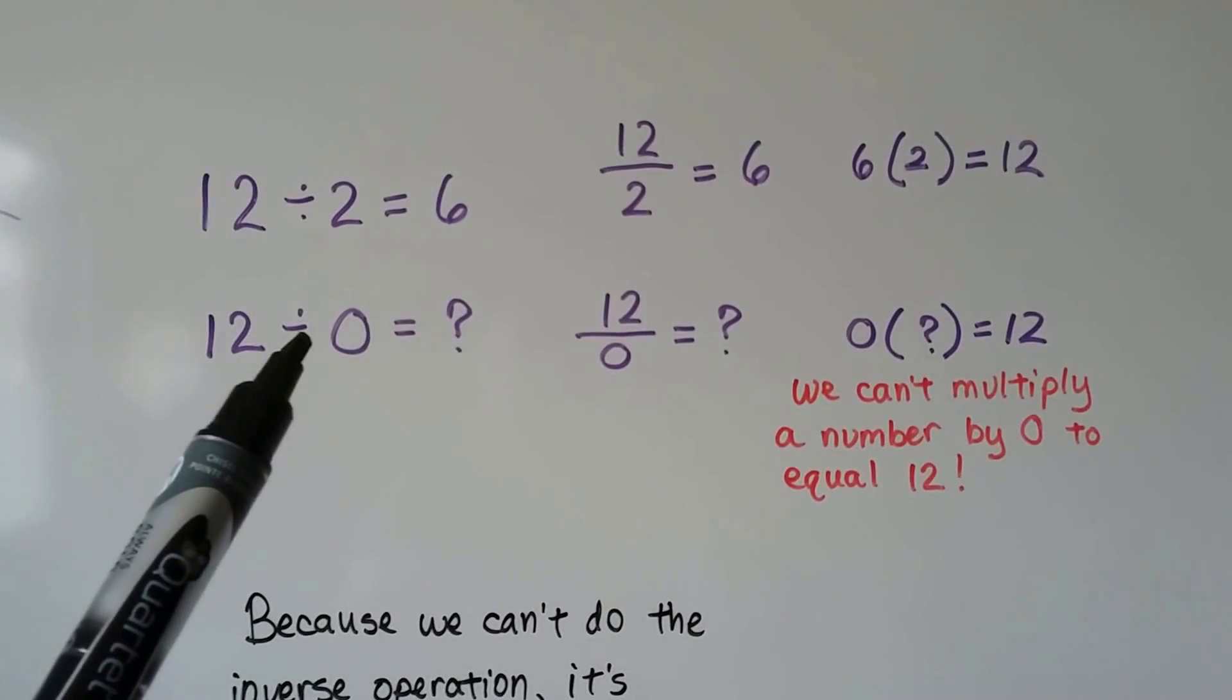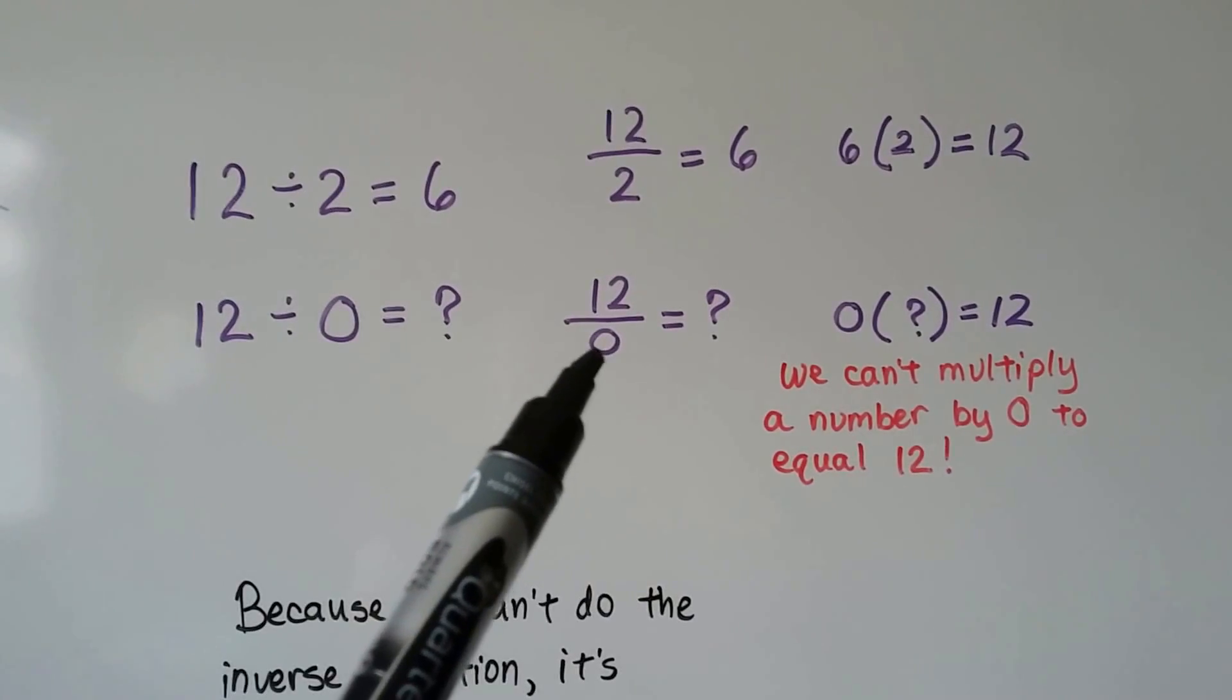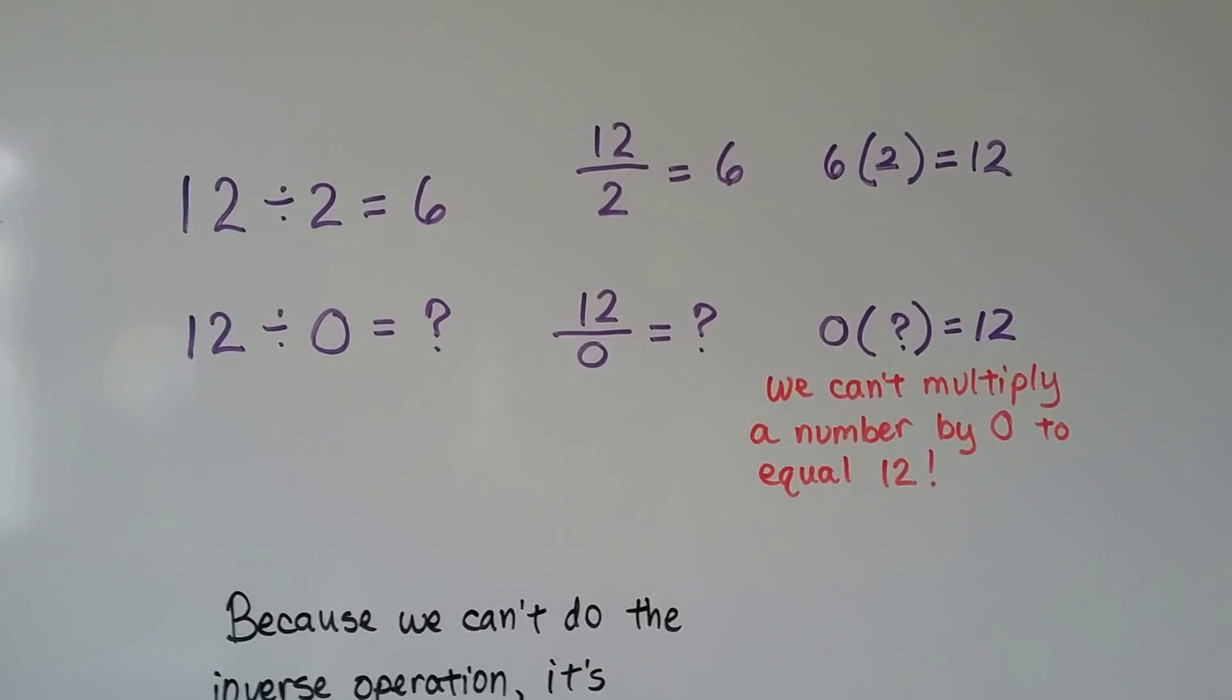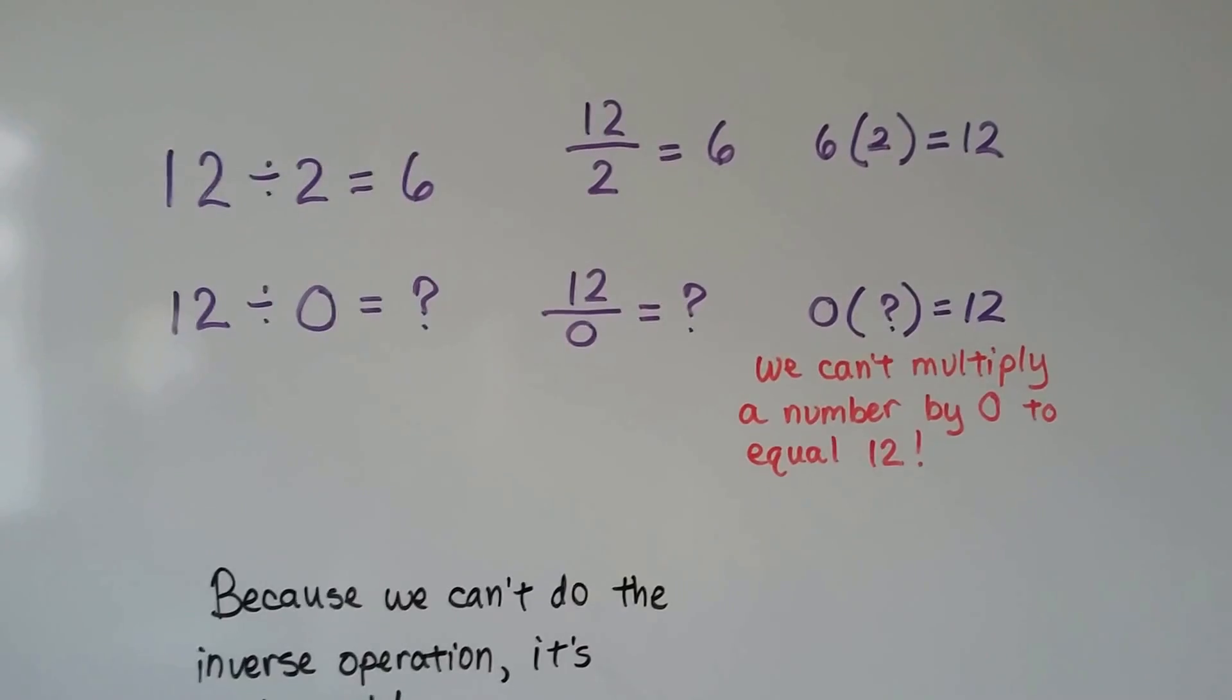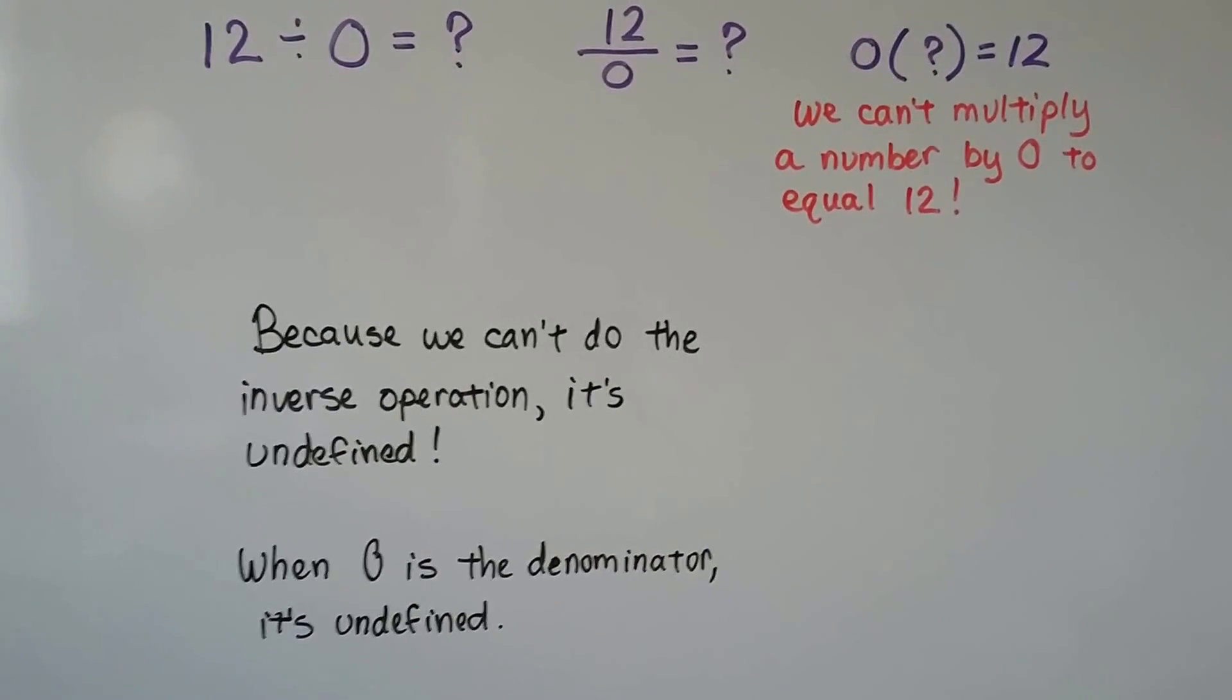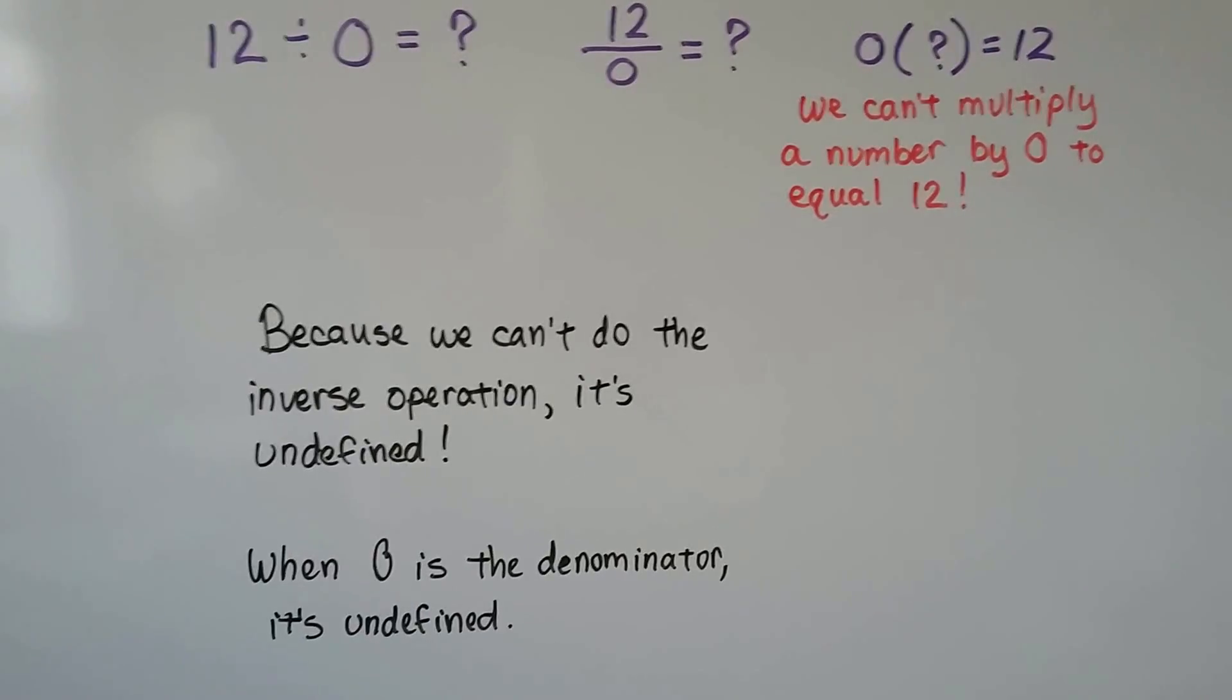But when we have a 0 here, it doesn't work. 12 divided by 0, well, what quotient times 0 is going to equal 12? There isn't any. Any number times 0 is 0. So we can't multiply a number by 0 to equal the 12. Because we can't do this inverse operation, it's undefined. So whenever 0 is the denominator, it's undefined.